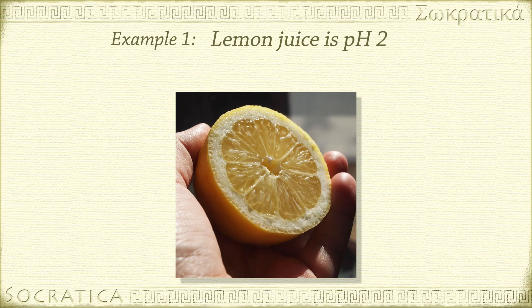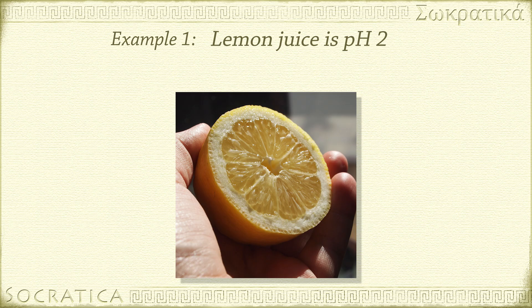Let's see a real-world example. Lemon juice is acidic. It has a pH of 2. What is the concentration of H+ ions in lemon juice?